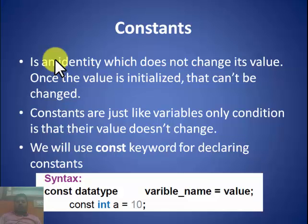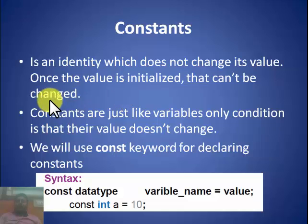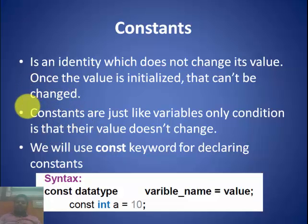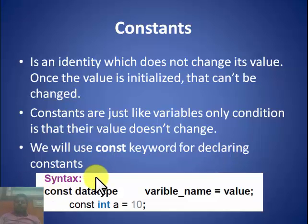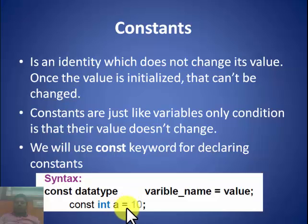Next are constants. Constants are entities which do not change their value — once a value is initialized, it cannot be changed throughout the program. Constants are like variables in that they have a name and a memory location, but their value remains fixed. We use the const keyword to declare constants. The syntax is: const data_type variable_name = value. For example: const int a = 10. Note that you must give the value at the time of declaration — you cannot declare a constant and assign the value later.